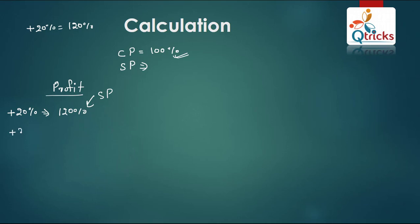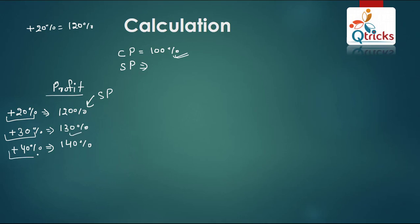Similarly, if you have 30% profit, then your SP is 130%. If you have 40% profit, then your SP is 140%. This way, the percentage increase equals the profit added to 100%: 30% profit gives 130% SP, and 40% profit gives 140% SP.